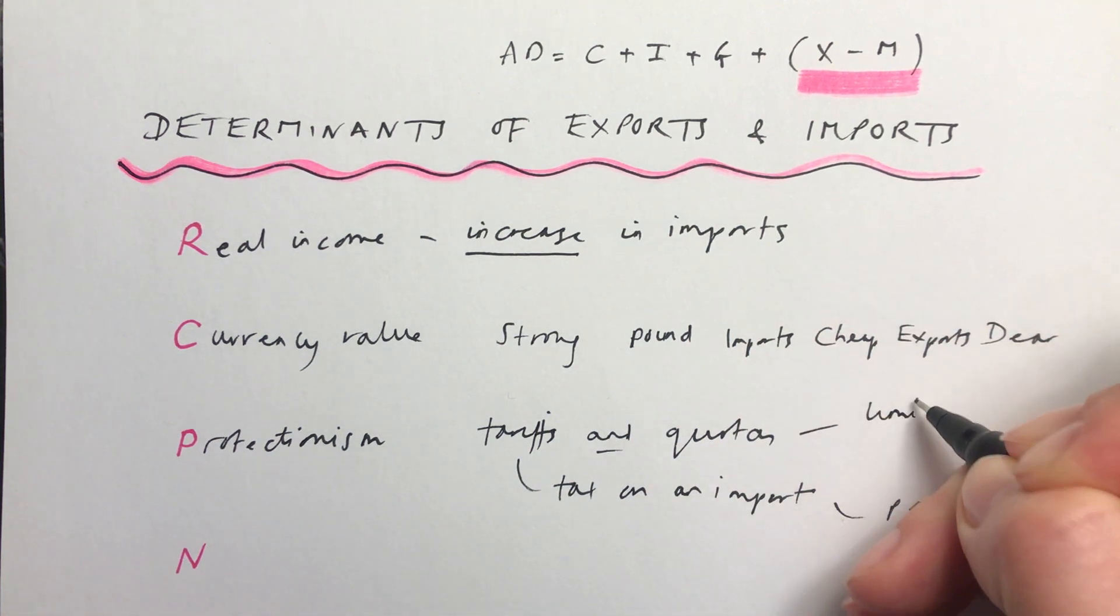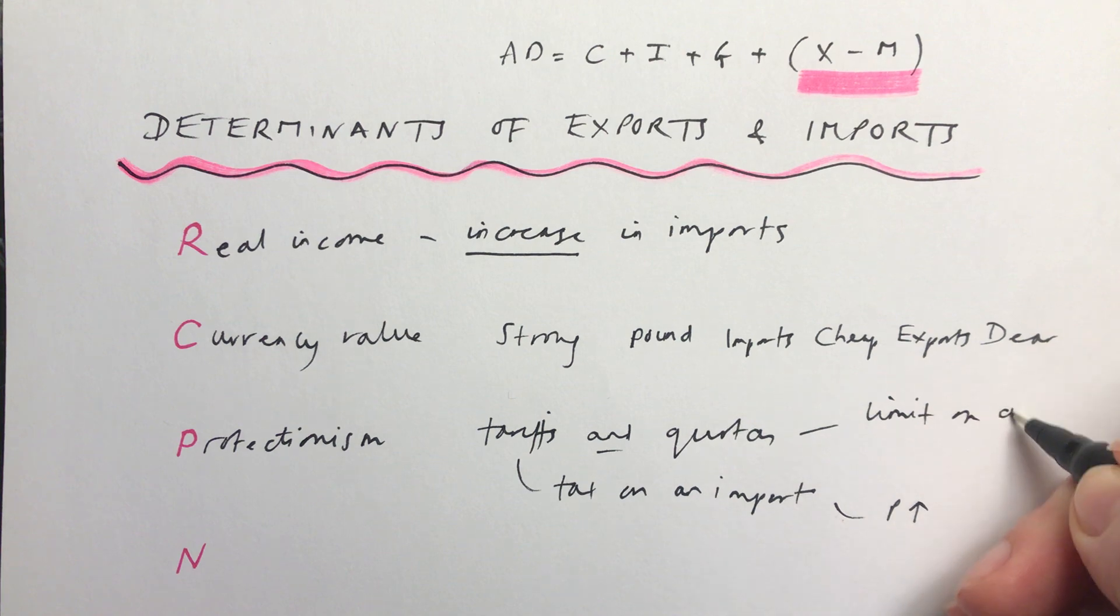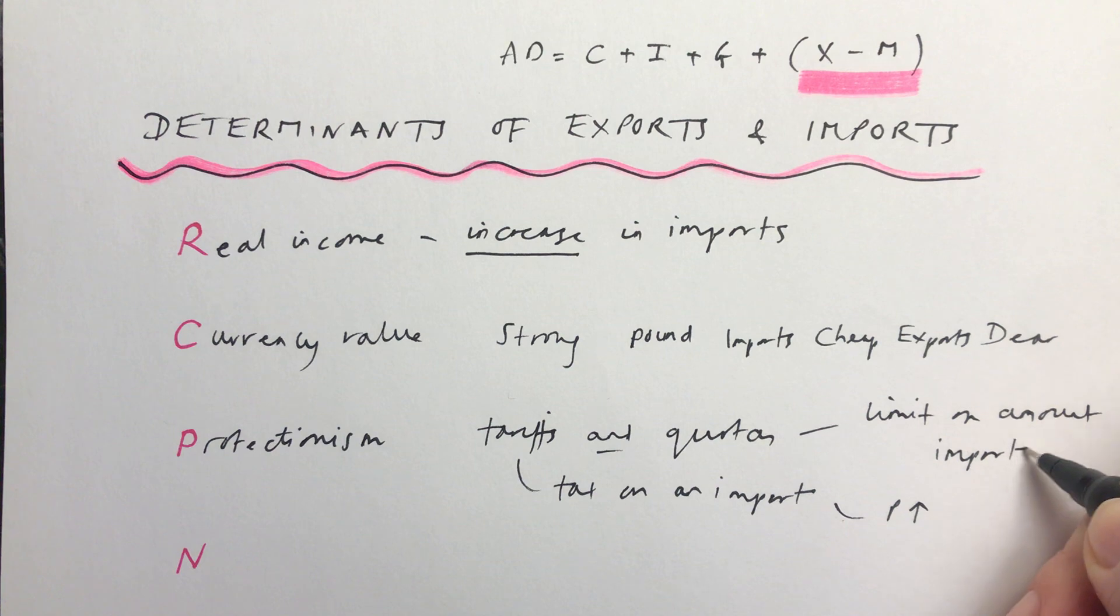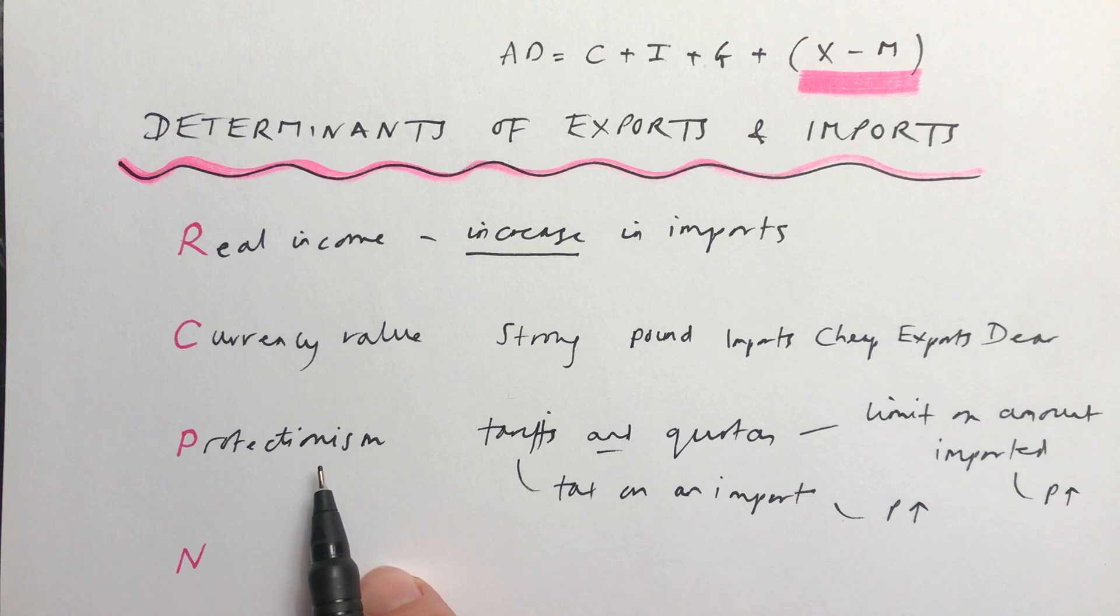A quota is a limit on the amount of something imported. We know that if this happens, there will be less of it available, and in that case it's likely also that the price will go up. So if you have more protectionism, you're going to have less imports coming into your country. It also works the other way around. If another country puts a lot of protectionism in place, we might find it harder to sell things to them. This is a bit like a barrier to getting things into a country.